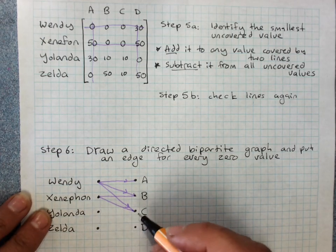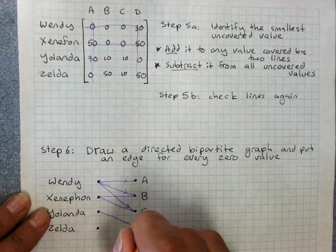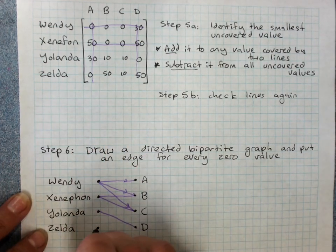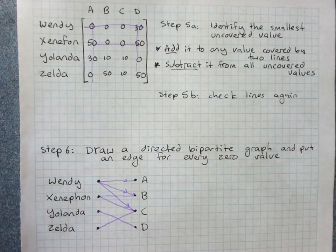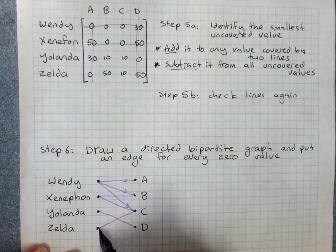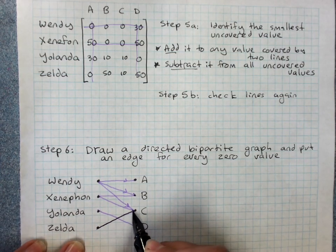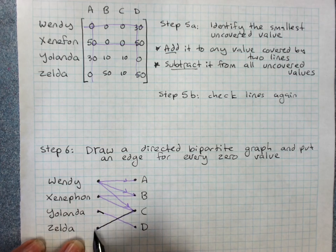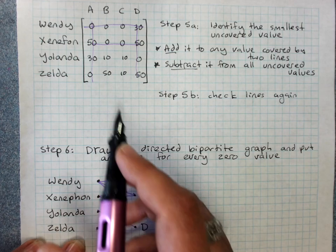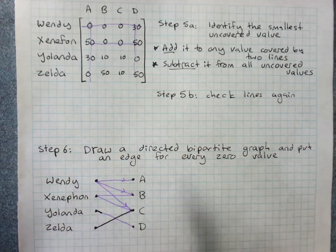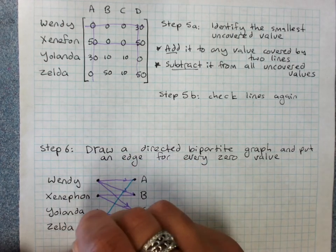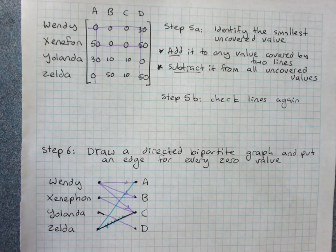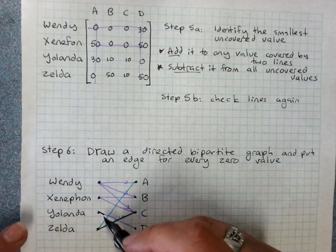Yolanda can do D only. Zelda can do A only. And remember when we've done our bipartite graph, when we're doing our allocations, then we start with the people who can have to do something in particular. Zelda has to do... Zelda has to do... Wait a minute. What did I do? Zelda's A. I'm sorry people. Sorry.